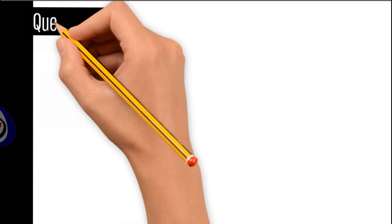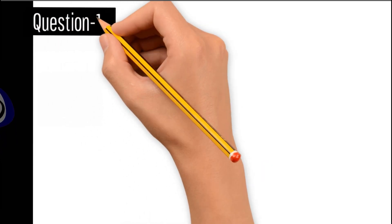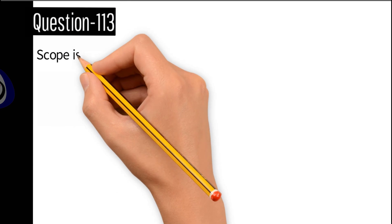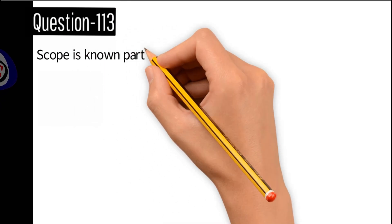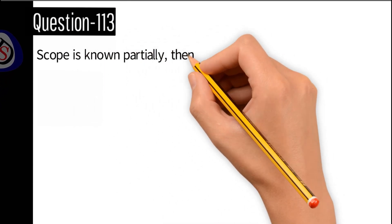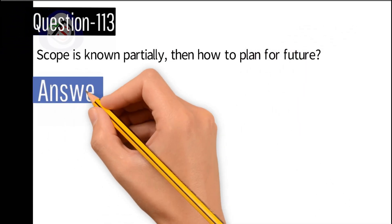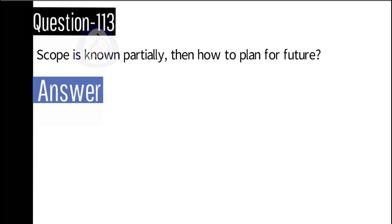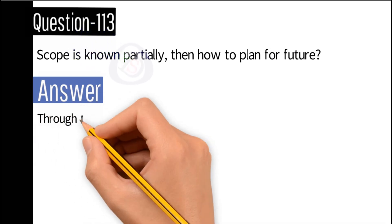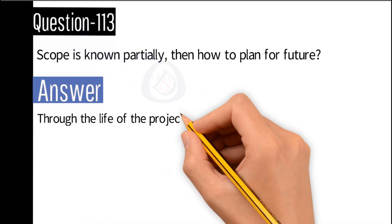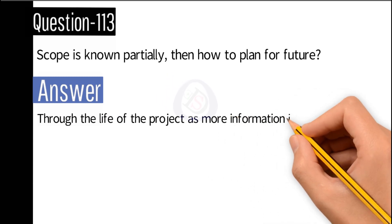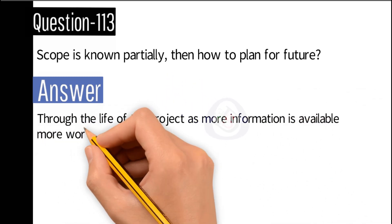Question number 113: Scope is known partially, then how to plan for future? Answer: Through the life of the project, as more information is available, more work to be planned is called agile management.